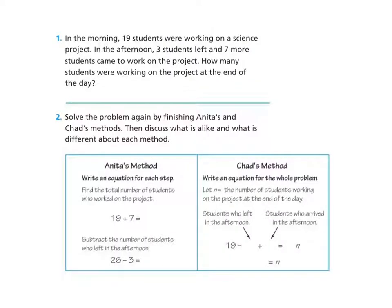Let's take a look at this word problem. It says: in the morning, 19 students were working on a science project. In the afternoon, 3 students left, and 7 more students came to work on the project. How many students were working on the project at the end of the day?